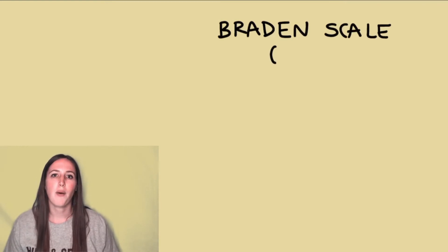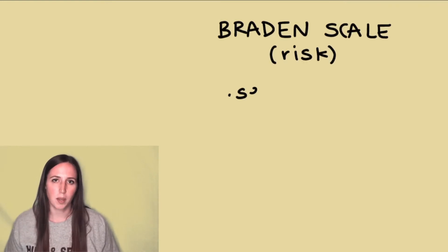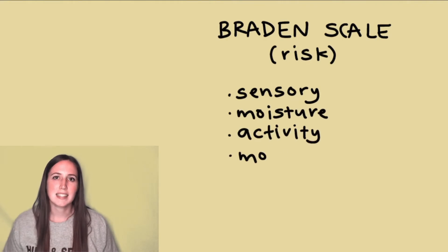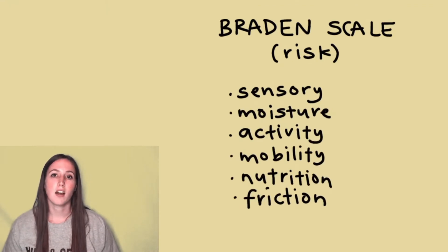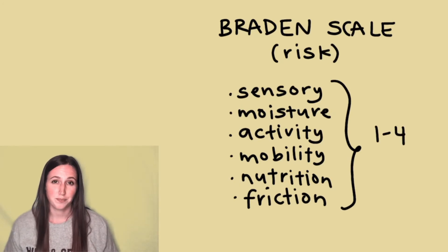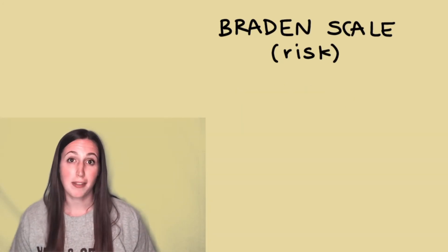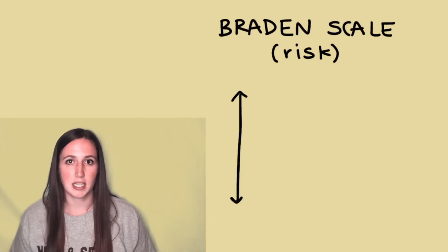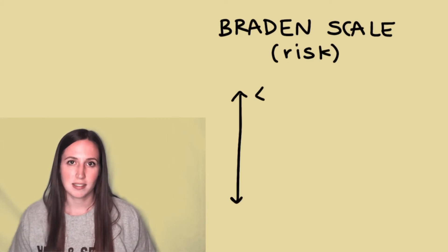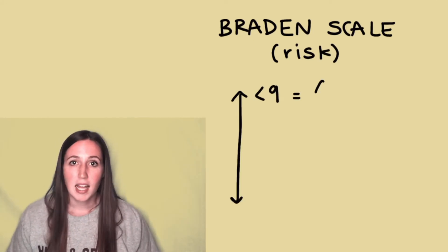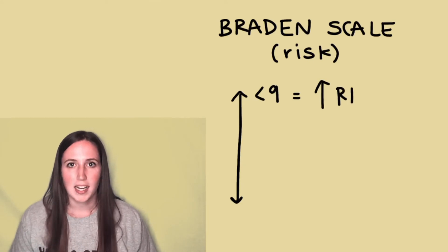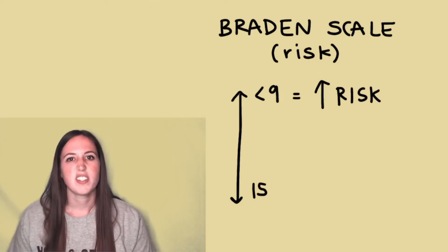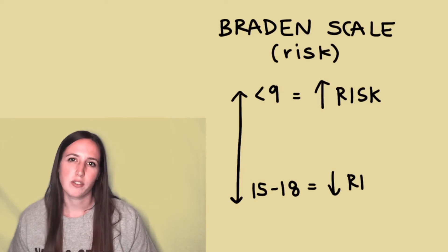For some of your patients in the hospital, you may want to use the Braden scale to determine how at-risk they are for developing a pressure ulcer. It consists of six items, all graded on a one to four scale, with four being no impairment at all. The most important thing to understand about the Braden scale for the NPTE is the grading scale: less than nine means they're at severe risk, versus 15 to 18 meaning they're at mild or low risk.